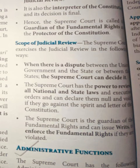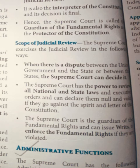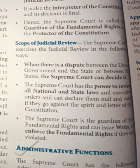Scope of judicial review: The Supreme Court exercises judicial review in the following ways. First, when there is a dispute between the union government and a state, or between states, the Supreme Court decides it. Second, the Supreme Court has the power to review all national and state laws and executive orders and can declare them null and void if they go against the spirit and letter of the Constitution. Third, the Supreme Court is the guardian of fundamental rights and can issue writs to enforce fundamental rights if they are violated.